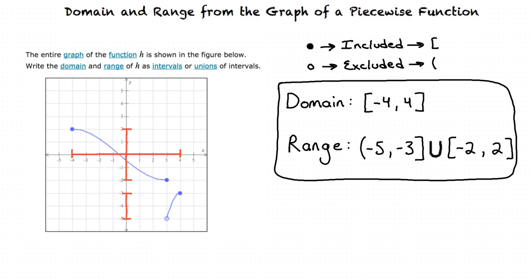Next, we look to see which points in the interval are included or excluded, based on whether the points are open or closed. If a point is open, we use parentheses. If it's closed, we use square brackets. Finally, we repeat these steps for the range, looking at the y-values of the function instead. You got it.